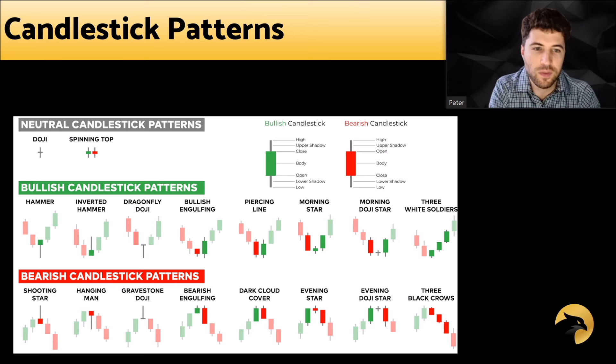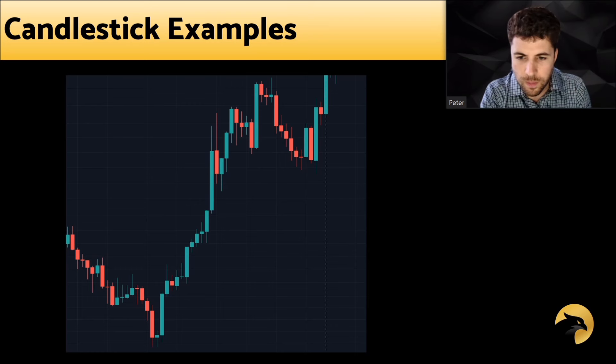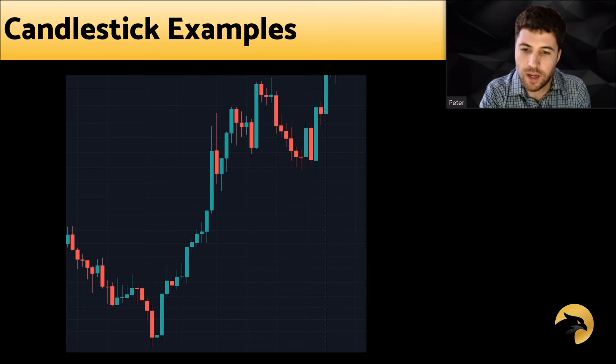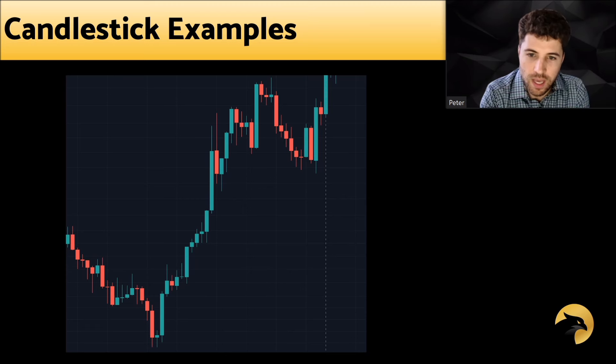Looking at this chart, on the lower area we see what could be a hammer candle, indicating the move downward could reverse — which it does. From there we see several instances of three white soldiers, as well as three black crows. That movement doesn't last too long before we see a doji candle followed by a movement upward, which gets engulfed temporarily before continuing the uptrend. You definitely want to study candles from a trader that has used these for a while before blindly using them — they do require a lot of context.